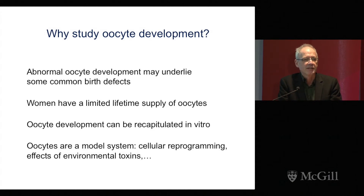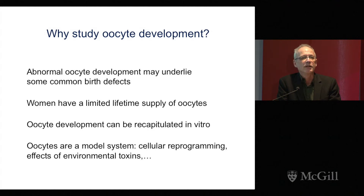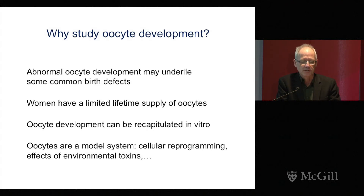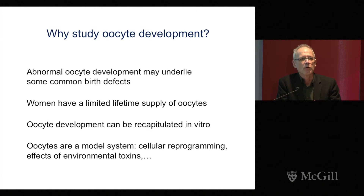A lot of work in the field has led to the development of culture systems that enable us to recapitulate much of normal oocyte development in vitro. This makes it a wonderful system to use to understand the mechanistic basis of this developmental process. And because we have this in vitro tool, oocytes are also a useful model system to investigate other biological questions, such as the basis of cellular reprogramming or the effects of environmental toxins on cell behavior.